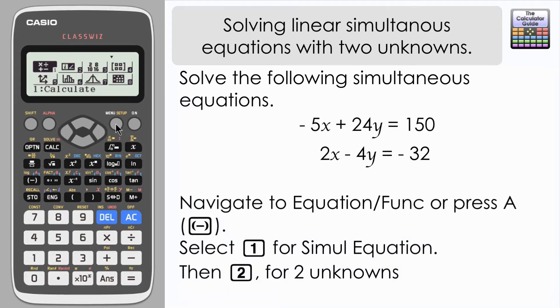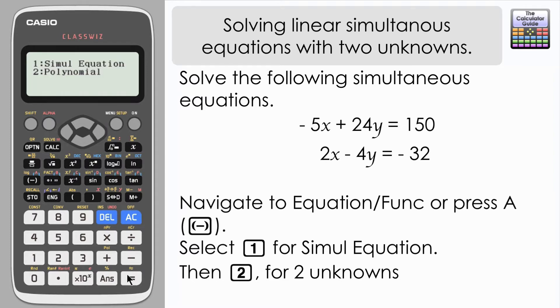Navigate down to equation mode, or you can press A on the calculator, and we want to select 1 for simultaneous equations. It will then ask us for the number of unknowns — in this case it's 2, so press 2.